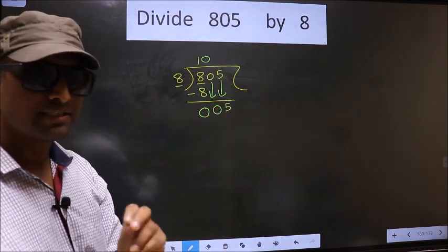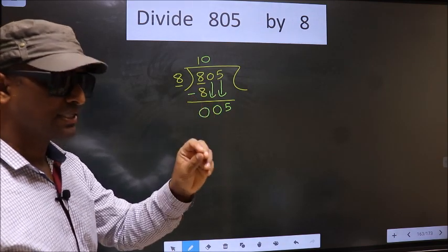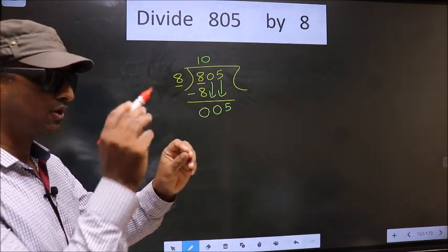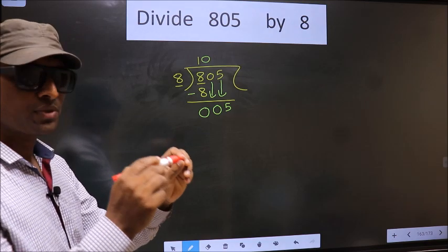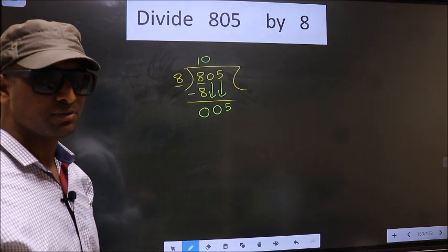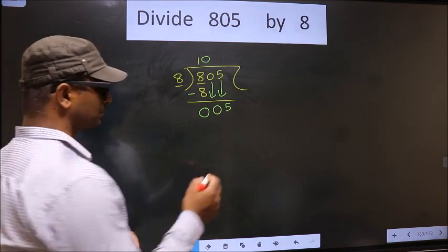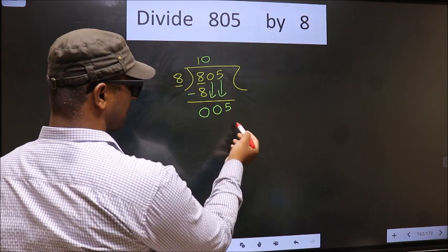Which is wrong. I repeat: bringing the numbers down and putting a dot and taking 0, both at the same step, you are not supposed to do. Instead, what you should think of is what number should we write here?